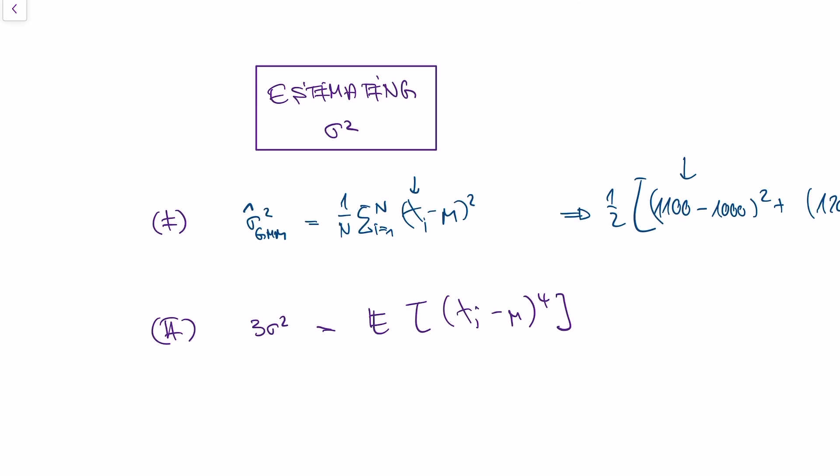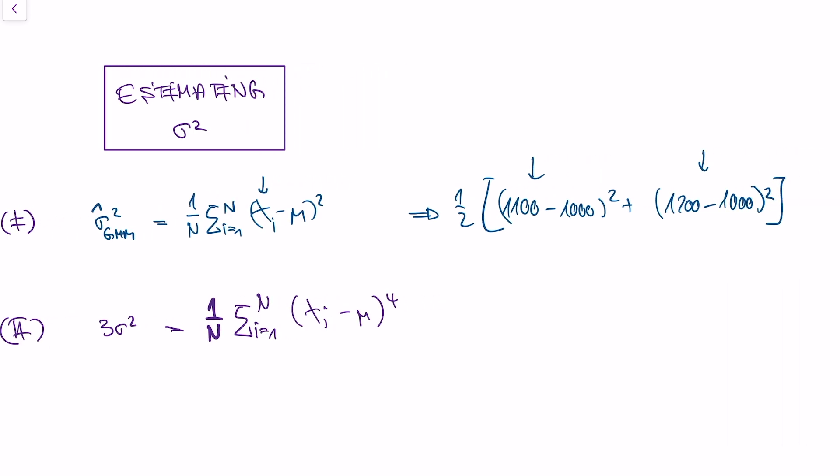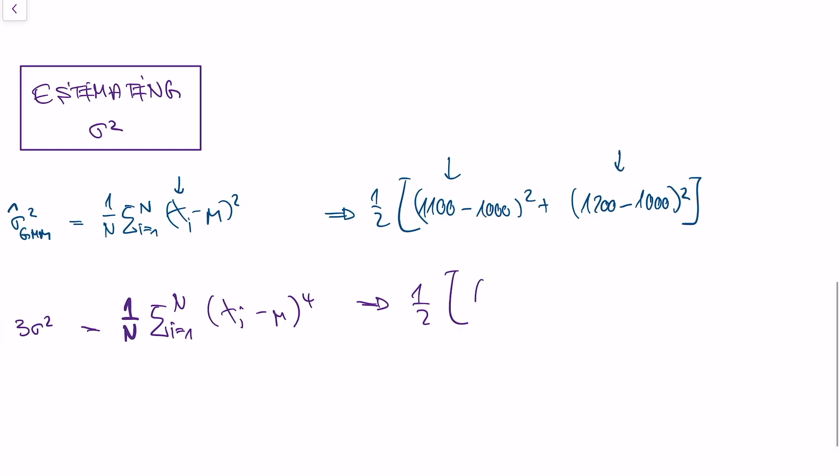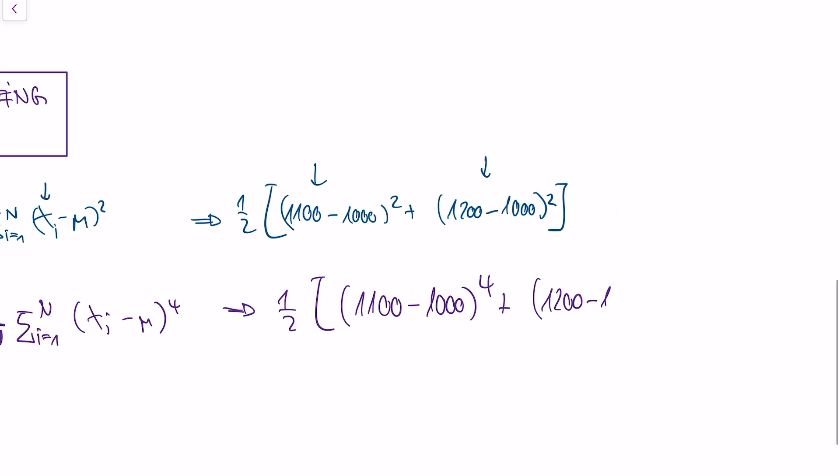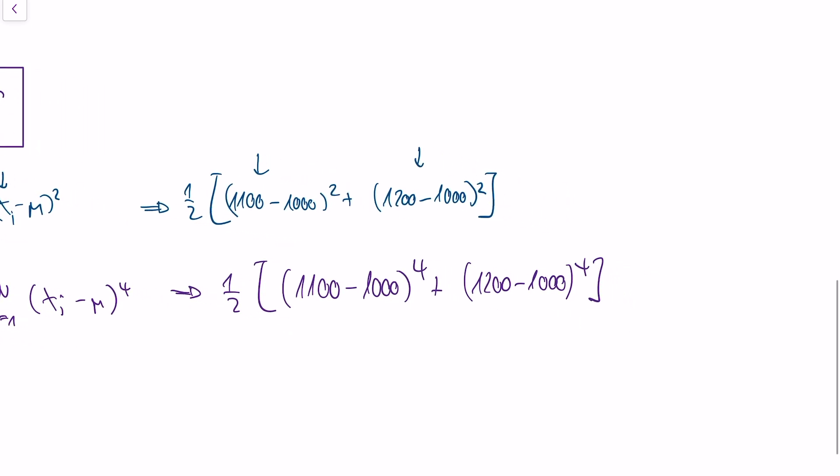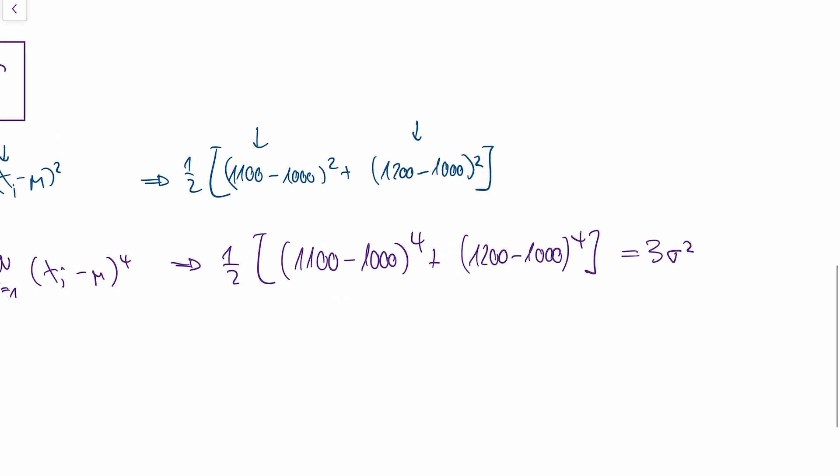We have this expected value here, but we can swap this expected value with the sample average. So let's just say this is 1 over n, the sum, xi minus mu to the power of 4. And once again, we could take this to the data and use our same data and say, okay, first flight was 1100 passengers, second flight was 1200 passengers. And this yields three sigma squared. So if we want to get our method of moments estimator, we need to divide this part by three. And we get our method of moments estimator by using the fourth moment equation.